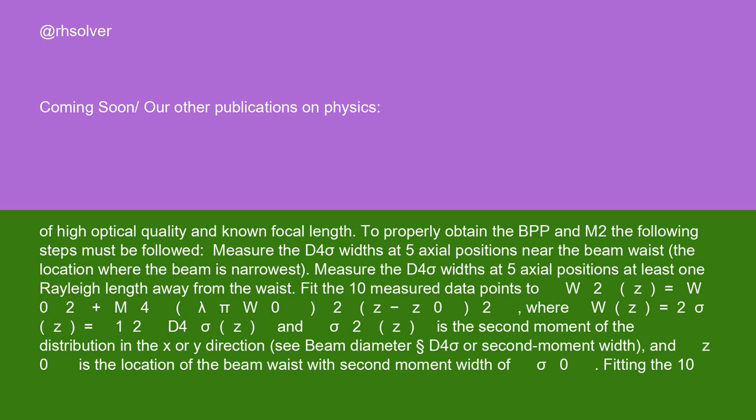To properly obtain the BPP and M², the following steps must be followed: Measure the D4 sigma widths at five axial positions near the beam waist (the location where the beam is narrowest). Measure the D4 sigma widths at five axial positions at least one Rayleigh length away from the waist. Fit the 10 measured data points to W²(z) equals W0² plus M4 (lambda pi W0)² (Z minus Z0)², where W(z) equals 2 sigma (Z) equals 1/2 D4 sigma (Z), and sigma²(Z) is the second moment of the distribution in the X or Y direction (see beam diameter D4 sigma or second moment width), and Z0 is the location of the beam waist with second moment width of sigma 0.